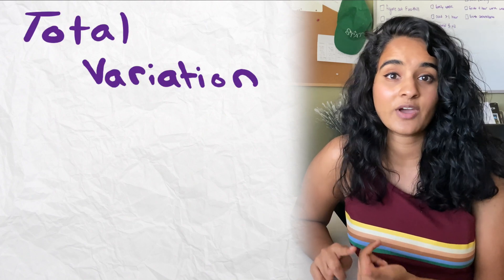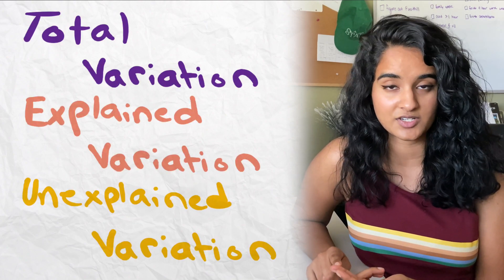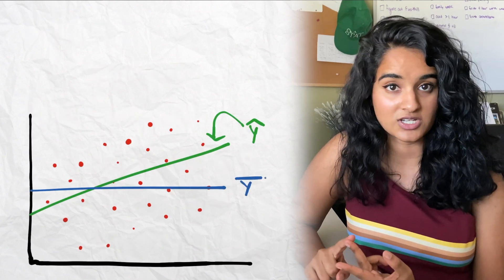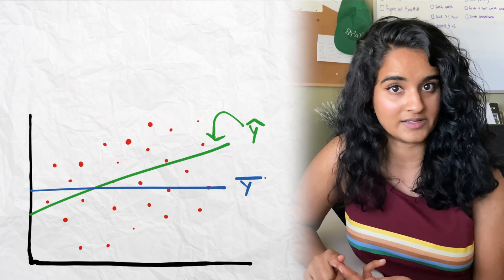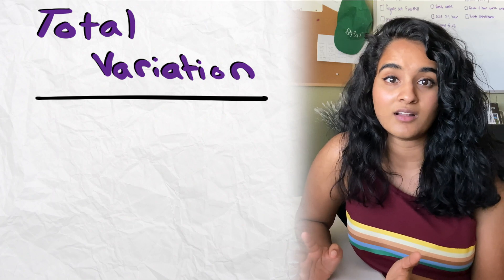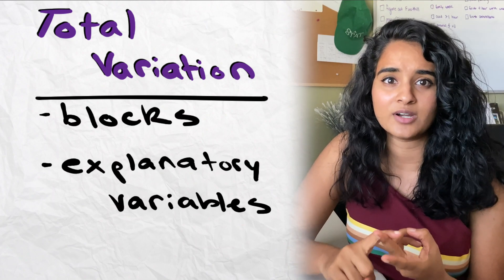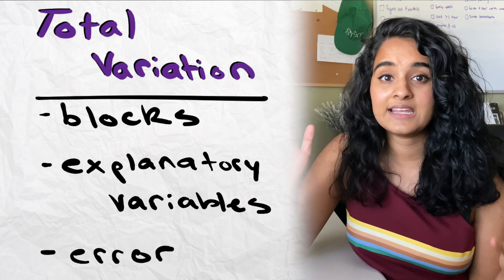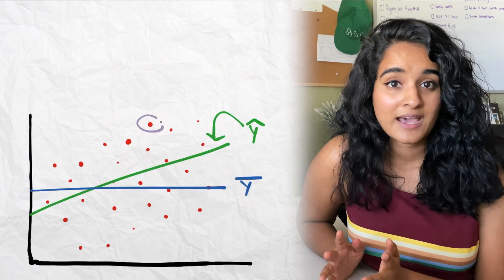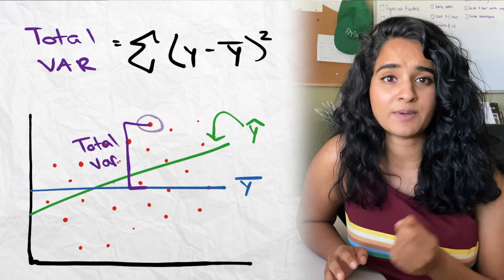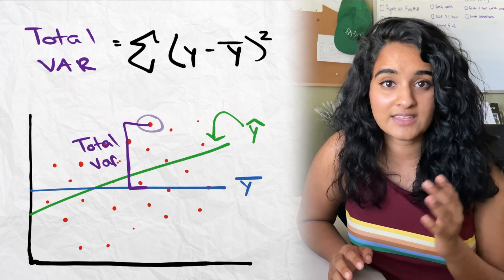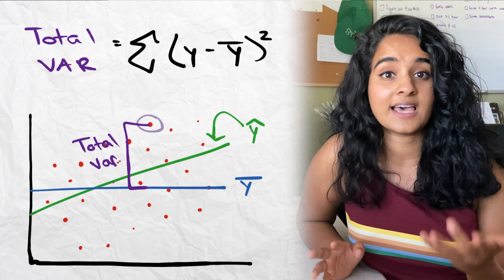In regression — or really any study in statistics — you have different forms of variation: total variation, explained variation, and unexplained variation. When looking at your model of data, you have your data points, your regression line, and y-bar, or the average of all the y values, which is a flat horizontal line. The total variation accounts for anything and everything in the model: your explanatory variables, your error, your residuals. Mathematically, total variation is the sum of squared distances from all your y values to y-bar. You draw lines from every y value to y-bar, find that distance, square it, and sum it all up.